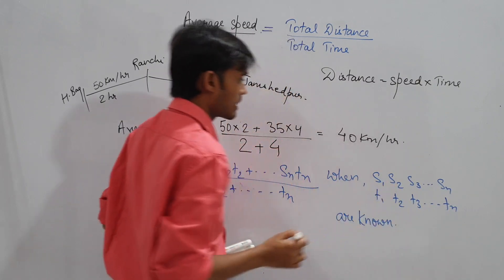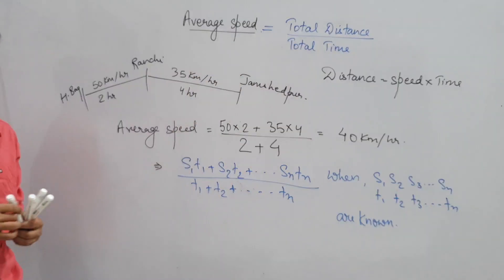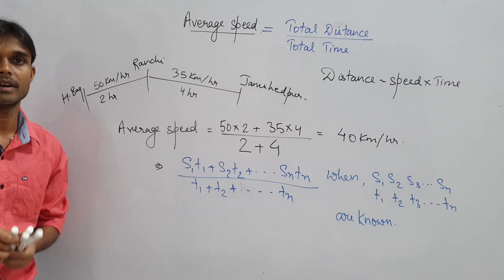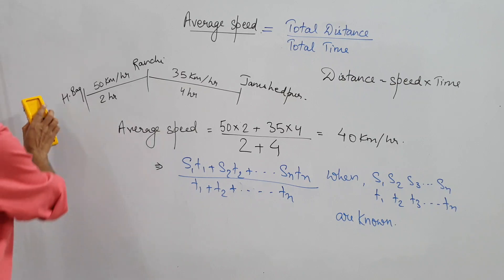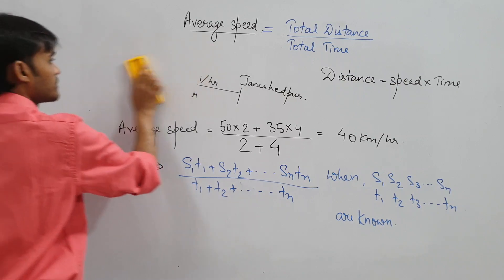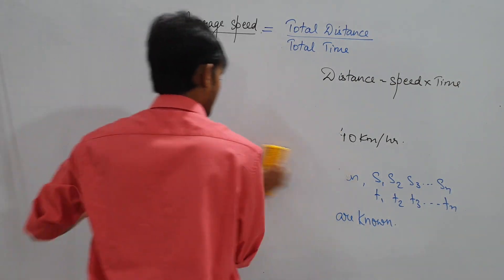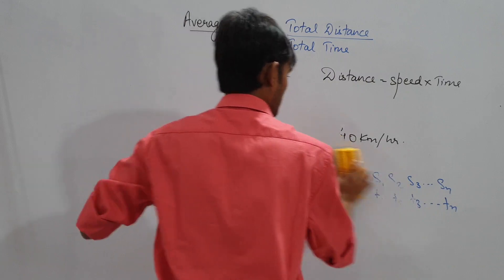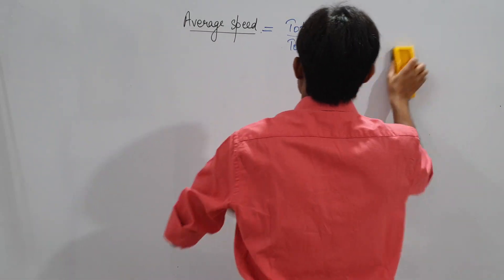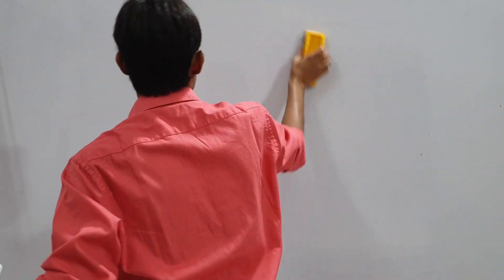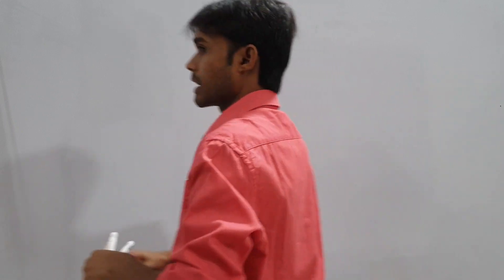These are some very basic concepts, but questions are asked in exams. So far we have seen three types of questions. Now moving to our fourth question on average speed — a very important question, again asked frequently in exams.